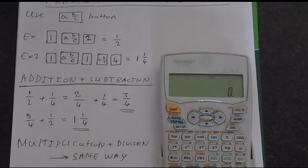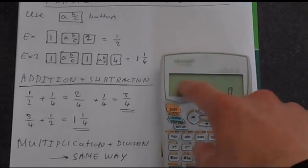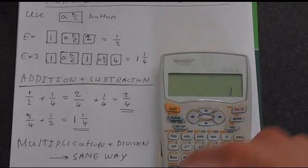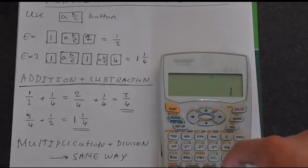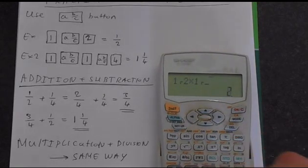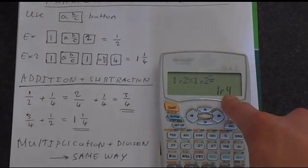Multiplication and division work in exactly the same way. You can just type it at the top here. A half times a half is obviously going to be a quarter, so if I just put that in, a half times a half, and that gives you a quarter as expected.